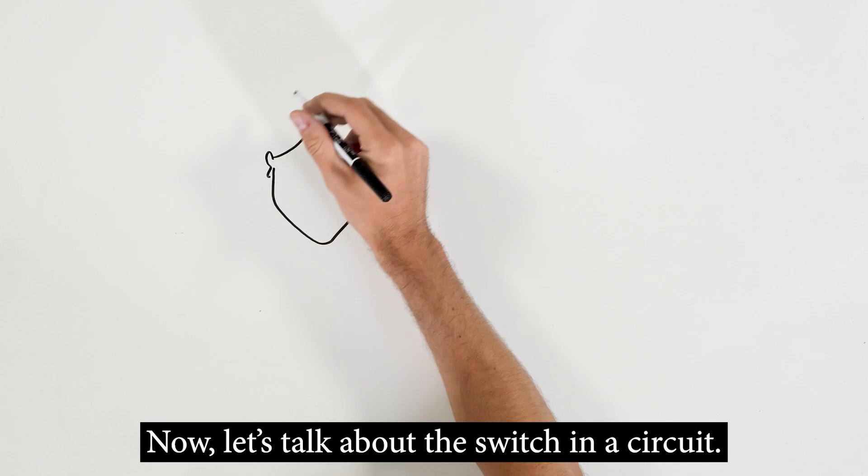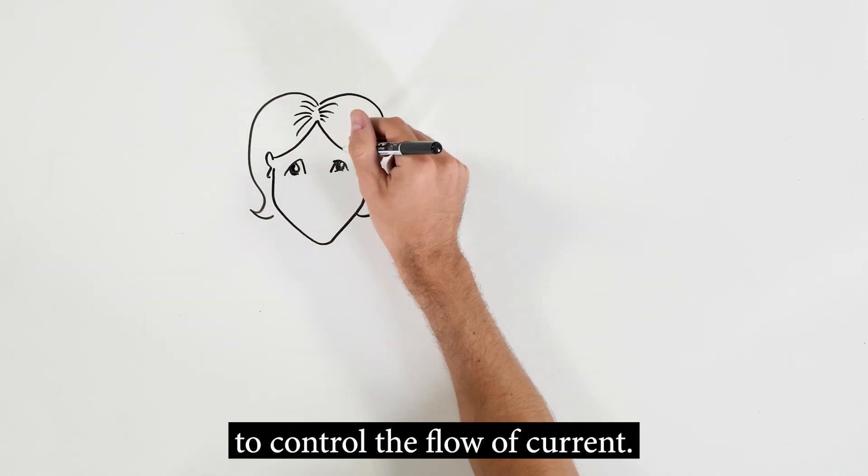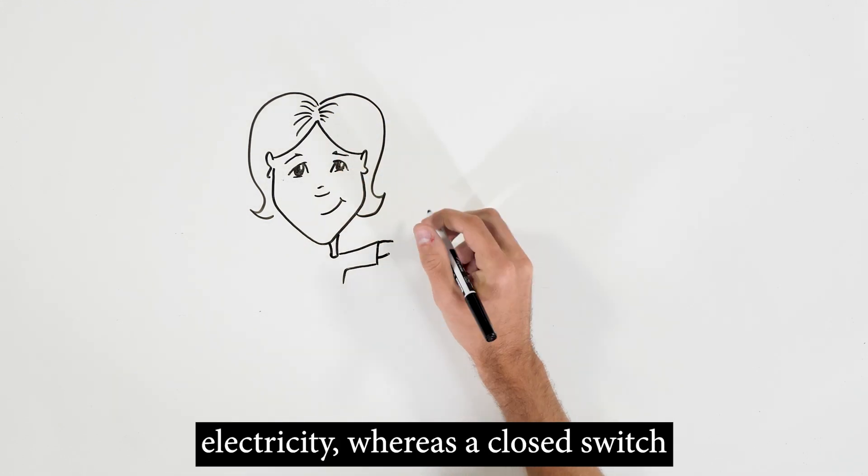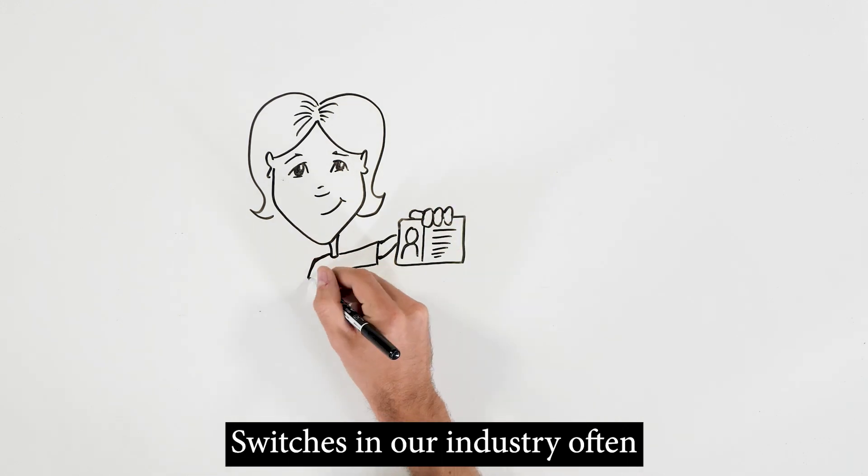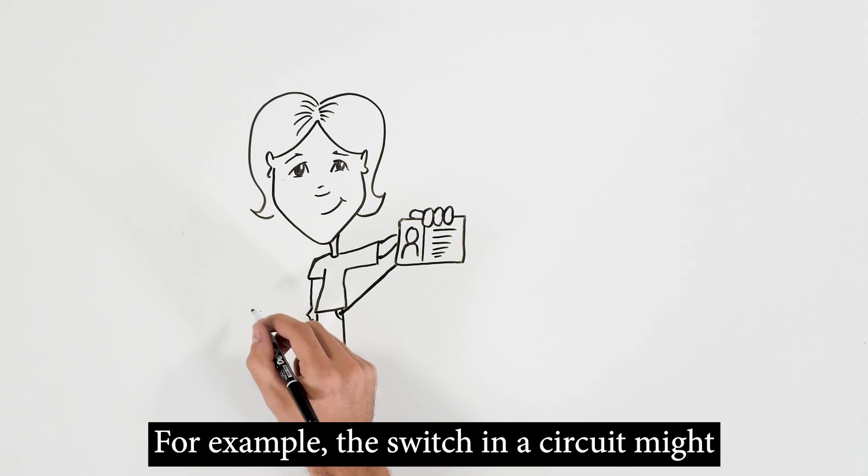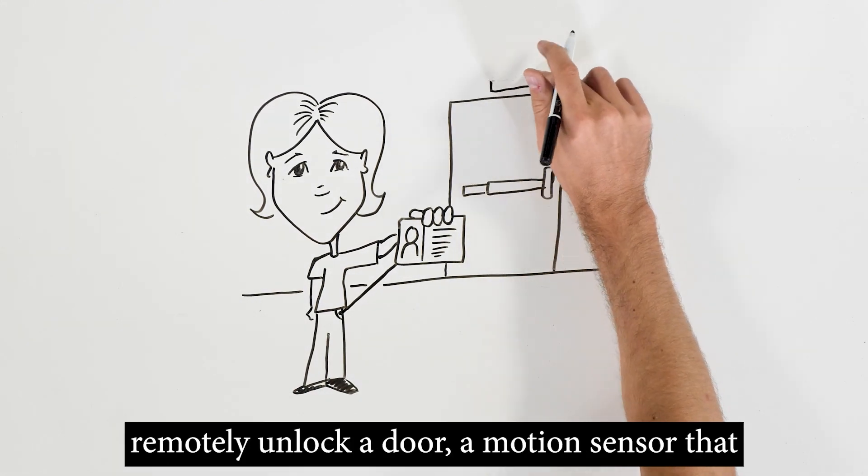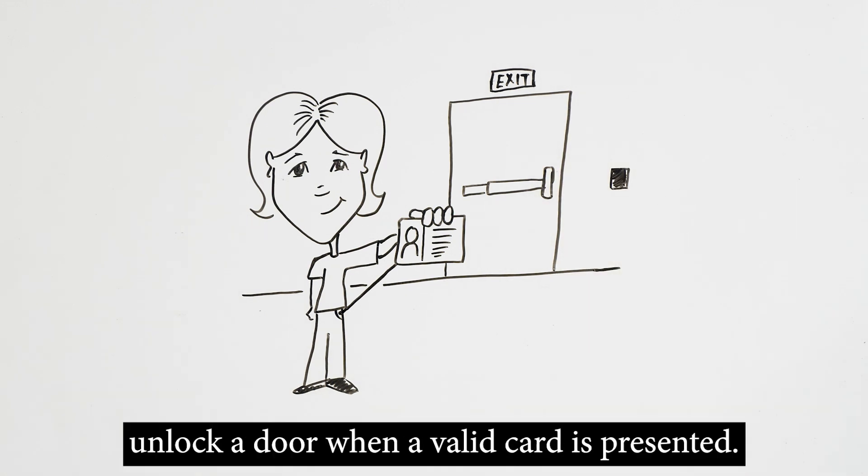Now, let's talk about the switch in a circuit. A switch opens and closes to control the flow of current. An open switch prevents the flow of electricity, whereas a closed switch allows the electricity to flow freely. Switches in our industry often come in the form of hardware. For example, the switch in a circuit might be a push button that a receptionist uses to remotely unlock a door, a motion sensor that sends a signal to the automatic door operator to open a door, or a card reader that will unlock a door when a valid card is presented.